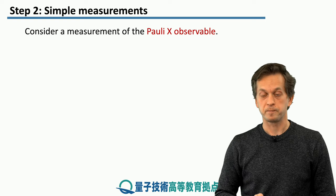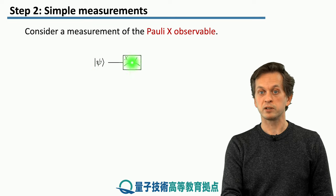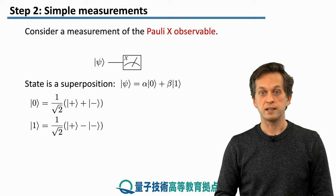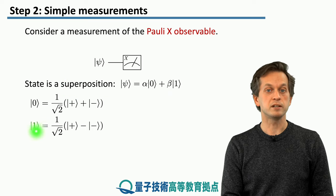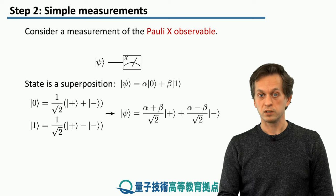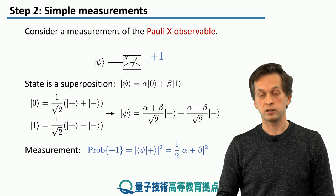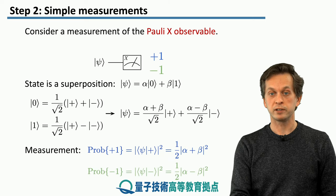Now let's try to do a measurement in the X basis. In quantum circuit notation, we have our initial state Psi and we perform a measurement in the X basis, indicated by the little X. We rewrite the state in the X basis: |0⟩ is an equal superposition of the plus and minus states, and |1⟩ is also an equal superposition but with a negative phase between the plus and minus states. From this form, we can read out the probability of obtaining the plus 1 outcome, which is ½|alpha + beta|², and the probability for the minus 1 outcome.